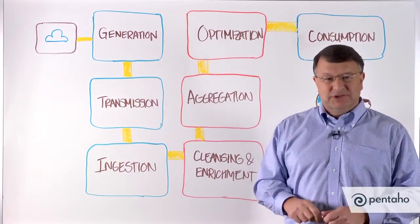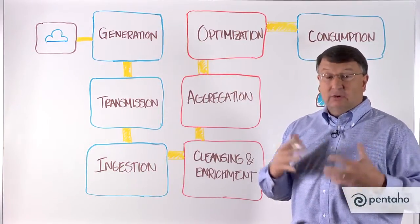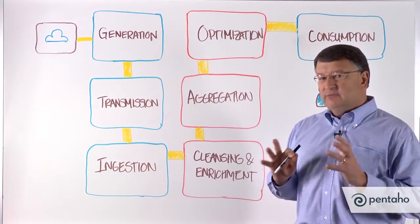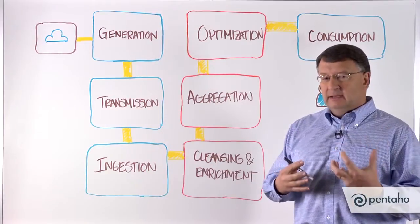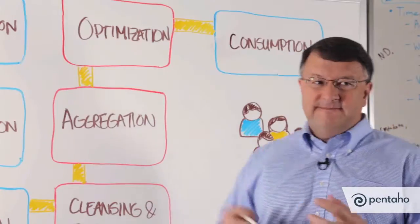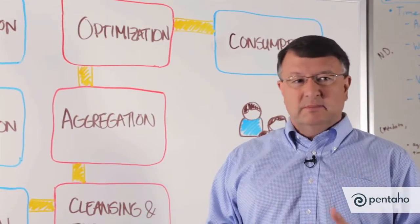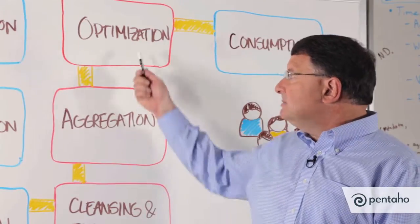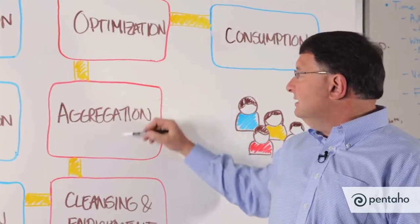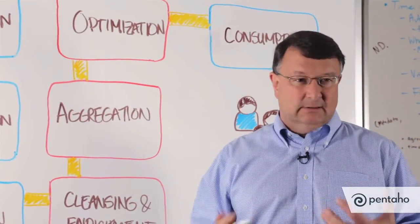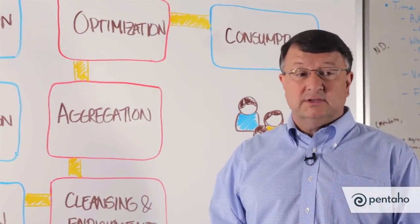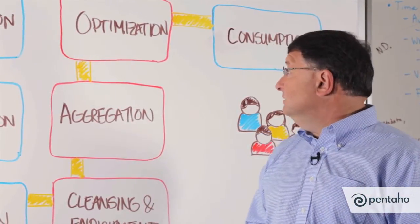Then we have a phase called optimization. The current state-of-the-art within Hadoop is to take this information and prepare it for analytics — get it to the point where users of a business intelligence system can get fast execution and response time from the system they're querying. For many customers, optimization means taking this aggregated information and putting it into an analytical database, which is optimized for high-performance queries and giving good response time to end users.